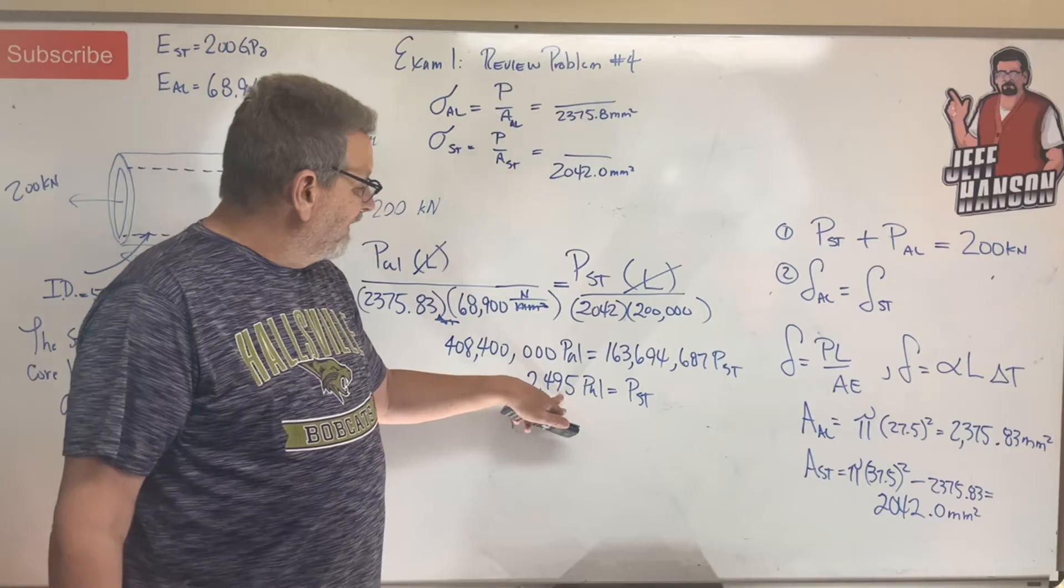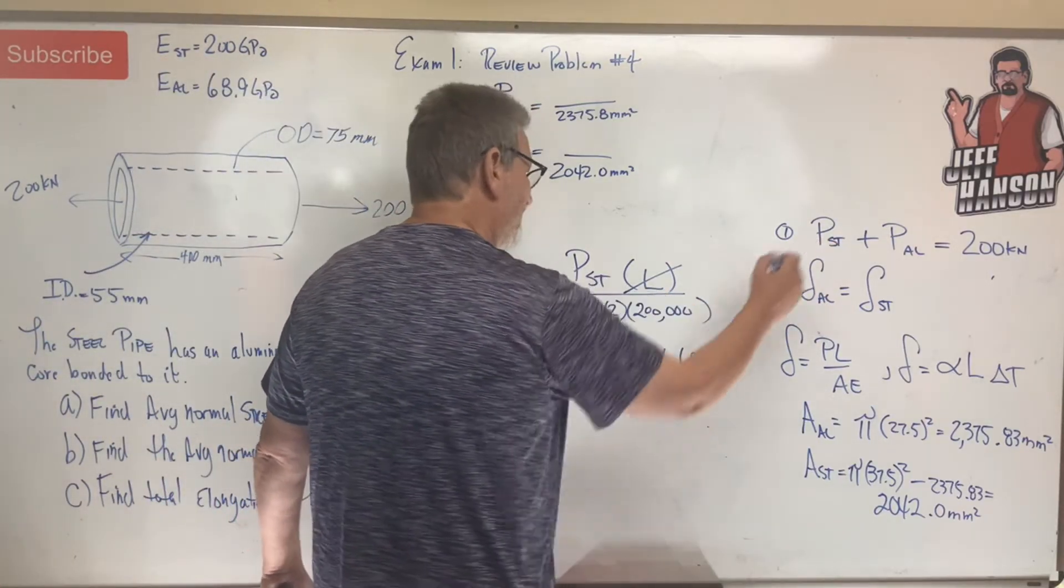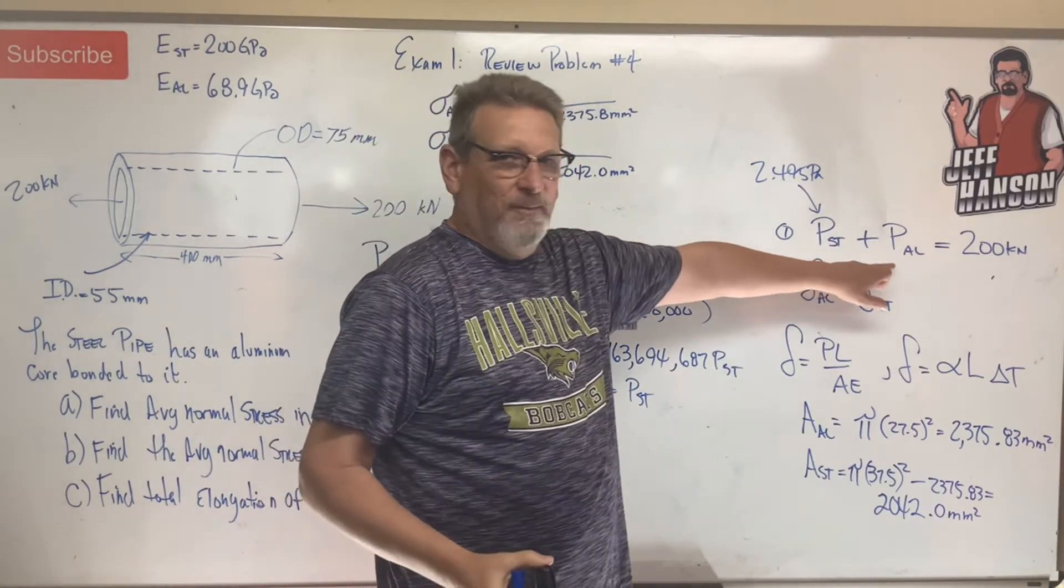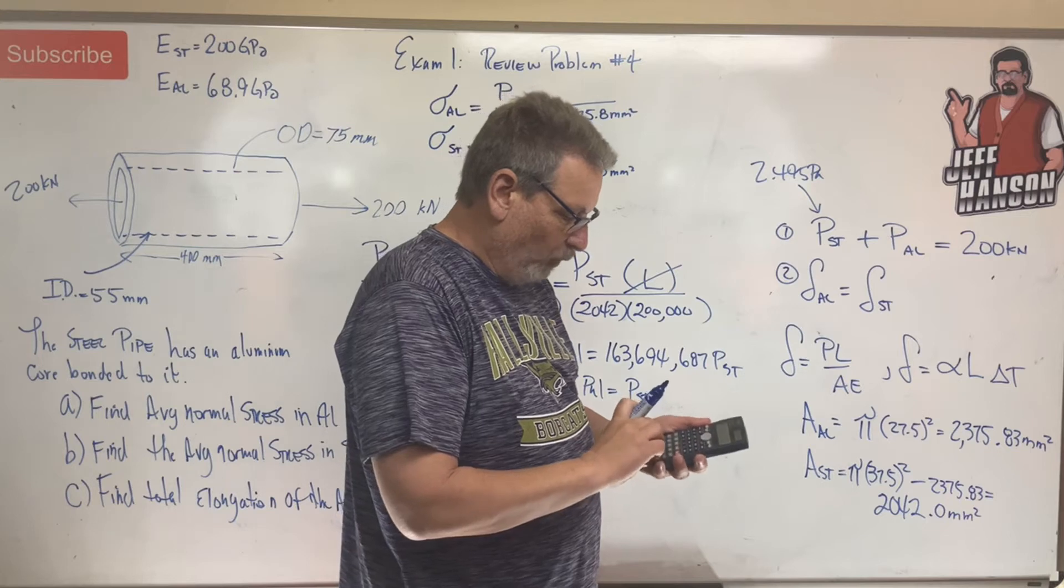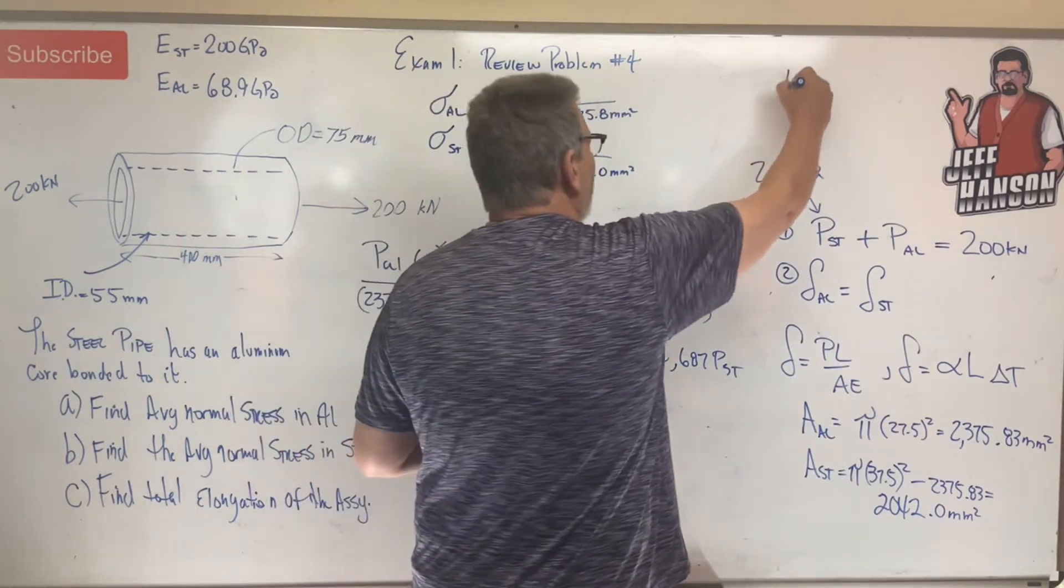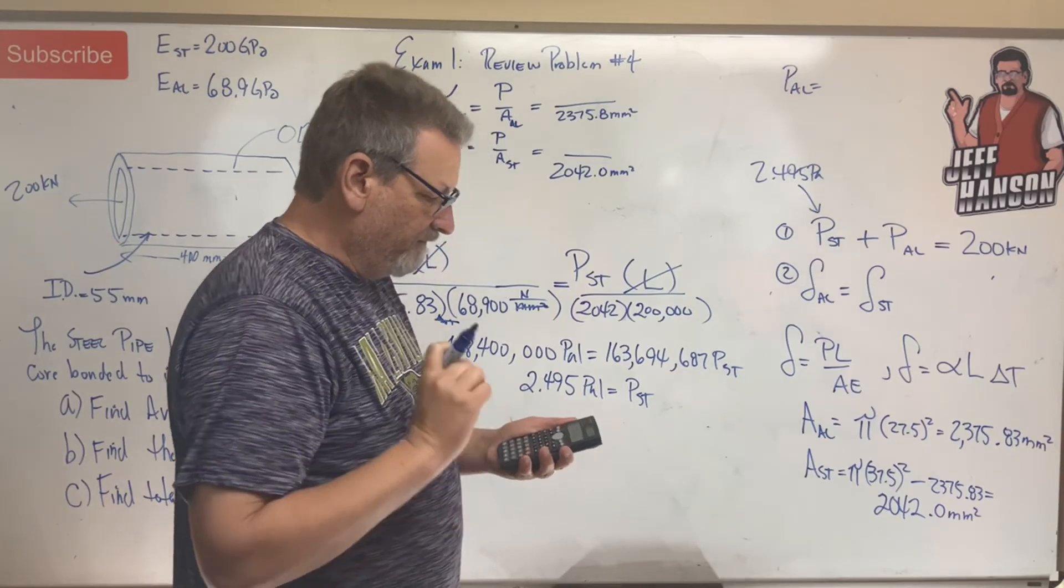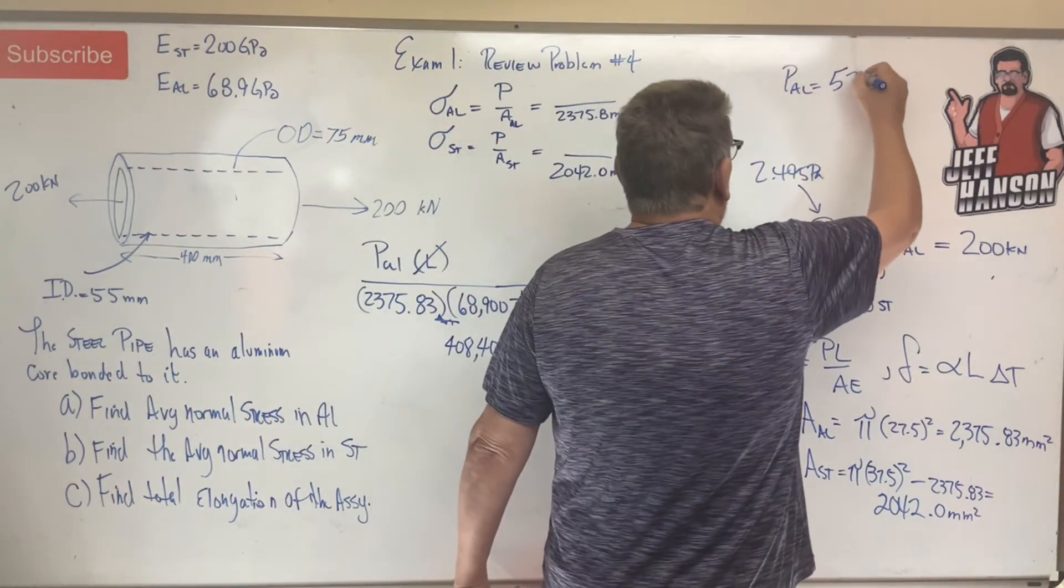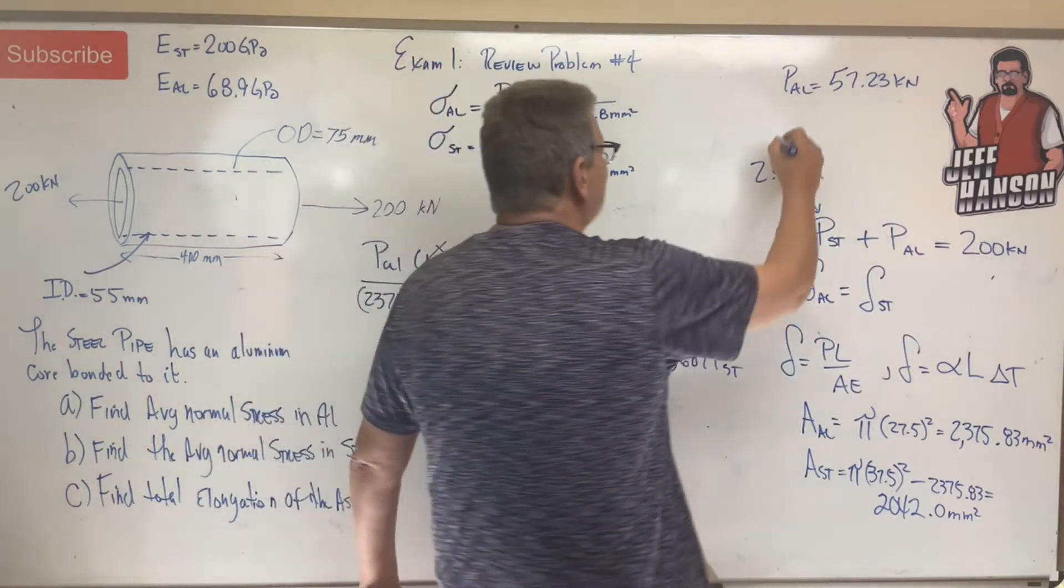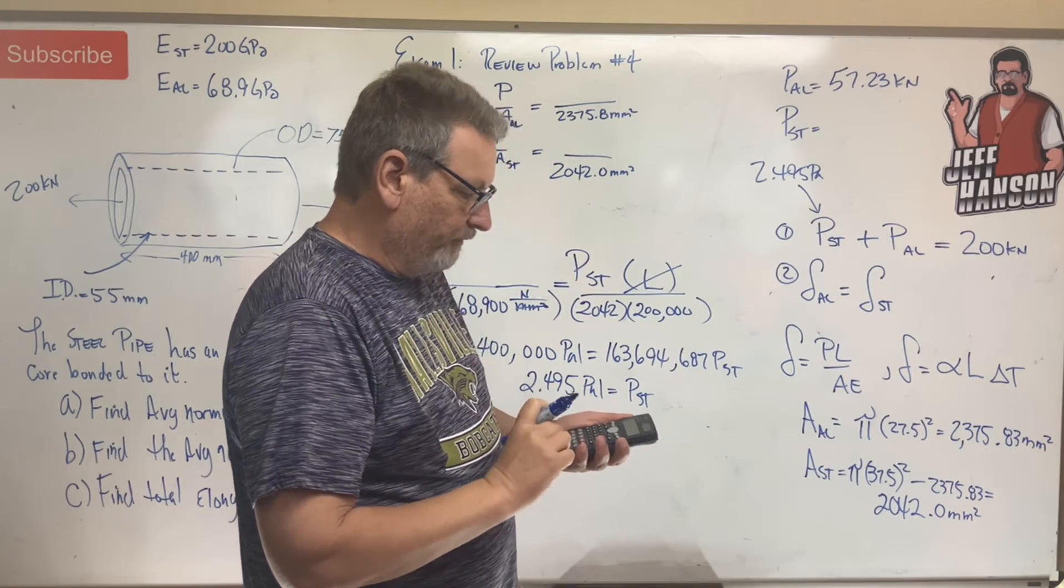But what do I do with that? Check this out, put it right there, right? For P steel, for right there, let's put this in there. 2.495 P-aluminum, so that much plus another P-aluminum that's got a one in front of it, that makes plus one plus one equals 3.495, right? And we'll take that divided into the 200 and we get that P-AL is equal to 200 divided by answer equals 57.23 kilonewtons. So of the 200, the aluminum is carrying 57.23 and the steel, which is a stronger material, is carrying 200 minus answer equals 142.77.